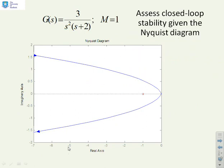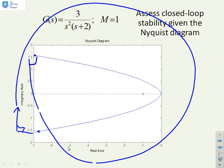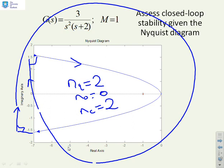The next example also has a double integrator, so care is needed. Adding the right-hand turn and going a full 360 degrees for the double integrator, we get NQ equals two, NO equals zero, so NC equals two. For this example, the system is always closed loop unstable for all positive values of gain.